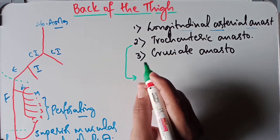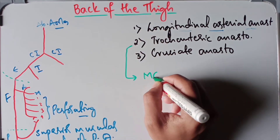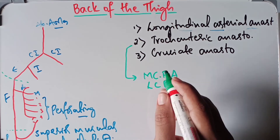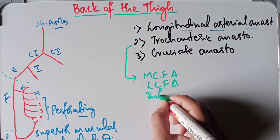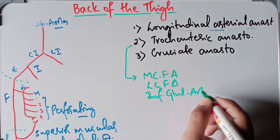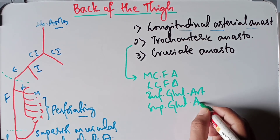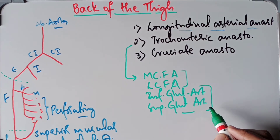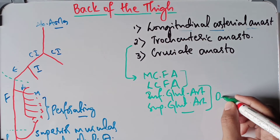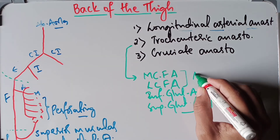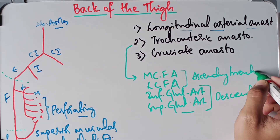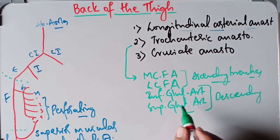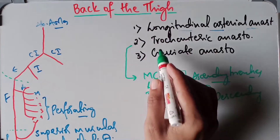The trochanteric anastomosis is formed by the ascending branches of the medial circumflex femoral artery and the lateral circumflex femoral artery, along with the descending branches of the inferior gluteal artery and the superior gluteal artery. So the ascending branches of the medial and lateral circumflex femoral arteries and the descending branches of the inferior and superior gluteal arteries all take part in the formation of the trochanteric anastomosis.